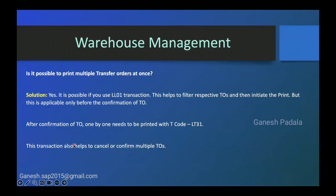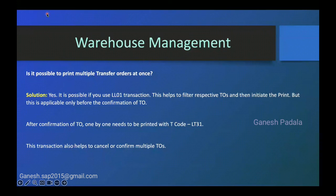Once you confirm the transfer order, you cannot use LL01, because LL01 is a Warehouse Activity Monitor where you can monitor transfer orders or transfer requirements that are not yet closed, not yet confirmed, or not yet completed. LL01 is mainly useful for printing bulk transfer orders before confirmation, which is also what the business mostly needs. After confirmation, they have to use LT31 to print one by one.